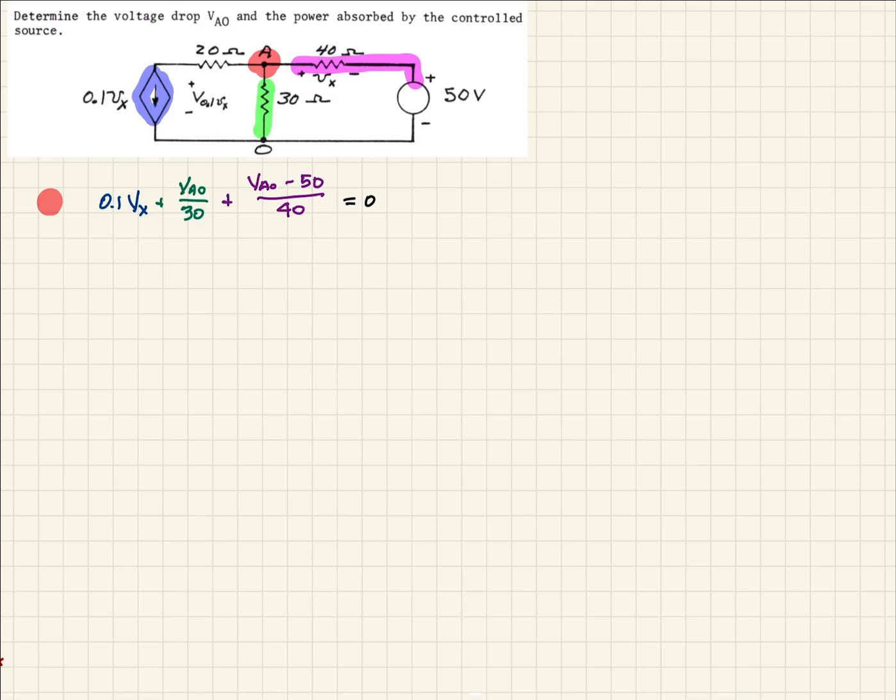So now we want to make another quick observation, and we'll do this off to the side here. Vx is defined right here, and so Vx is just going to be the difference between this node and this voltage supply, the independent voltage supply there. So if we can write that then as Vx is equal to VA0 minus 50, VA minus 50.